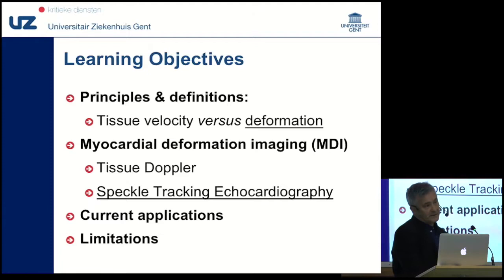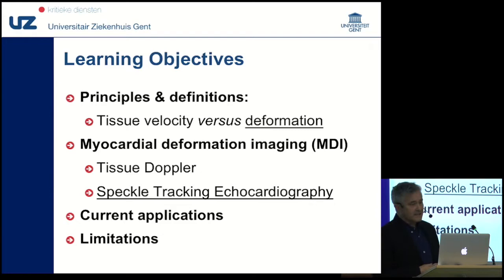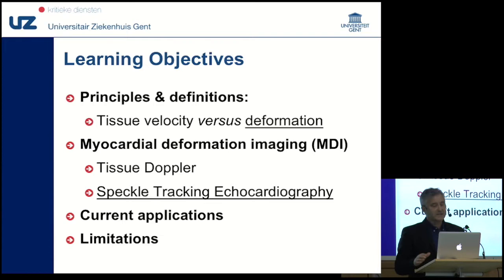The learning objectives here are to discuss the difference between velocity measurements of tissue and deformation measurements. The techniques for myocardial deformation imaging are tissue Doppler, as I said, and speckle tracking echocardiography — that's where we will focus on.